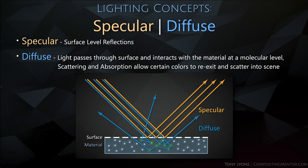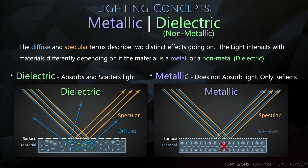Before talking about diffuse — when light passes through the surface and interacts with the material — we need to introduce another concept. In physically-based rendering, we need to know whether a material is metallic or dielectric (non-metallic). The diffuse and specular terms describe two distinct effects. Light interacts differently depending on whether a material is metal or non-metal: a dielectric absorbs and scatters light within the material, while a metallic does not absorb the light — it only reflects.